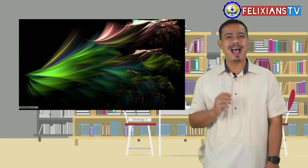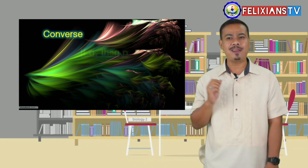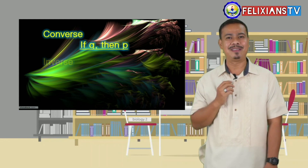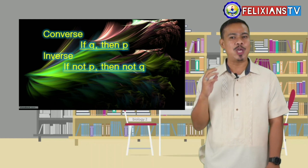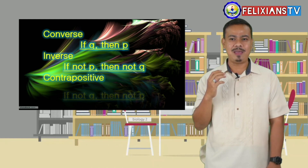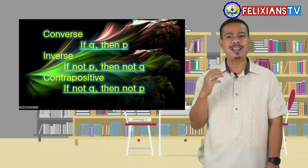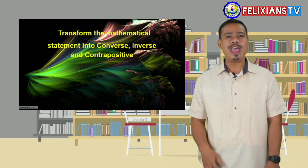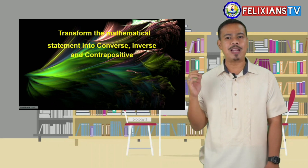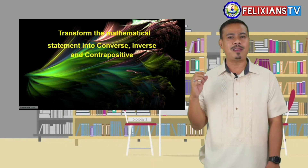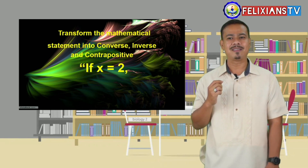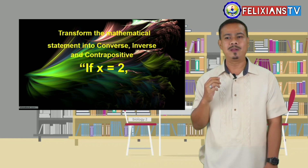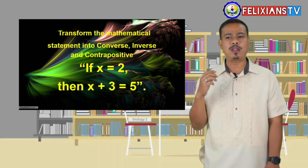Again, our points to remember: Converse — if Q, then P. Inverse — if not P, then not Q. Contrapositive — if not Q, then not P. Now it's your turn! Transform the mathematical statement into converse, inverse, and contrapositive. Let's get it on! If X is equal to 2, then X plus 3 is equal to 5. What is the converse?